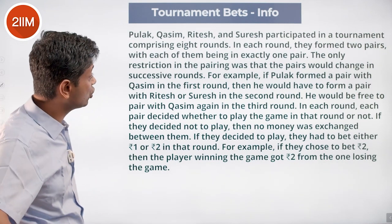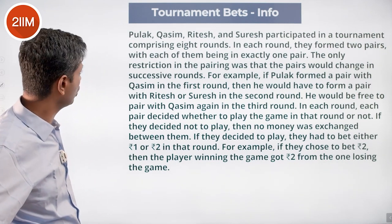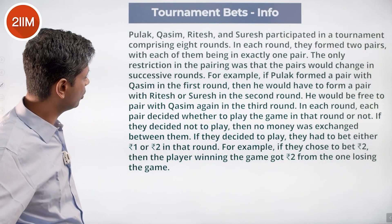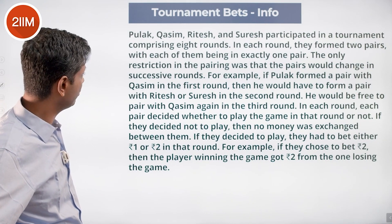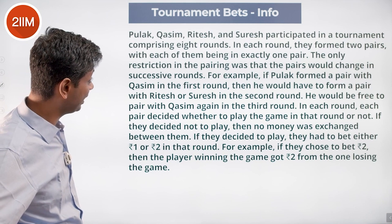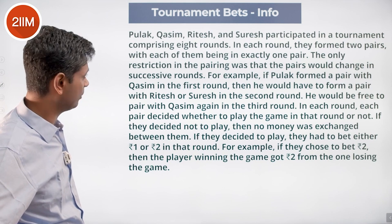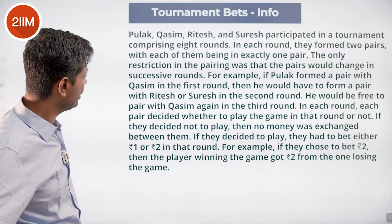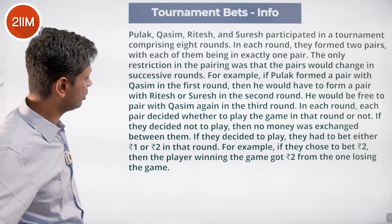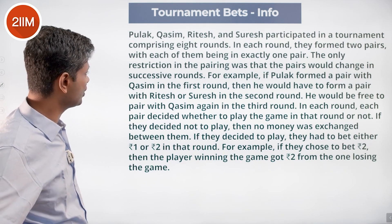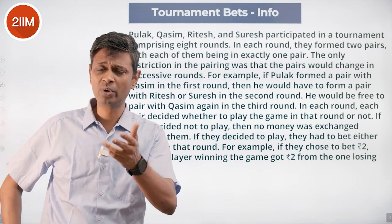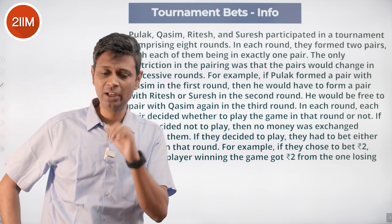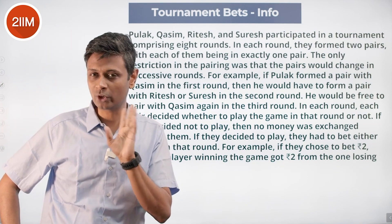Pulak, Kasim, Ritesh and Suresh participated in a tournament comprising eight rounds. In each round they formed two pairs, with each of them being in exactly one pair. The only restriction in the pairing was that the pairs would change in successive rounds — so in round one if P and Q play, round two P and Q cannot play.